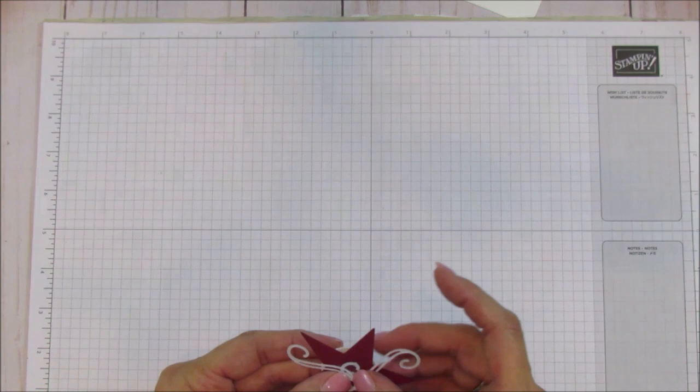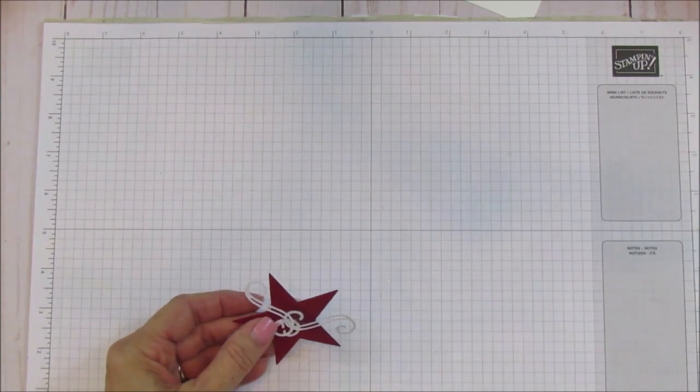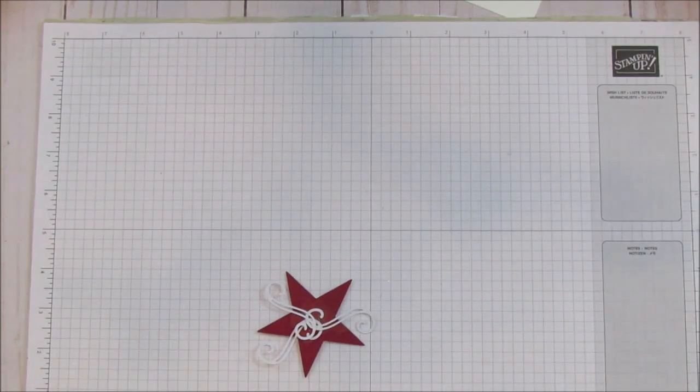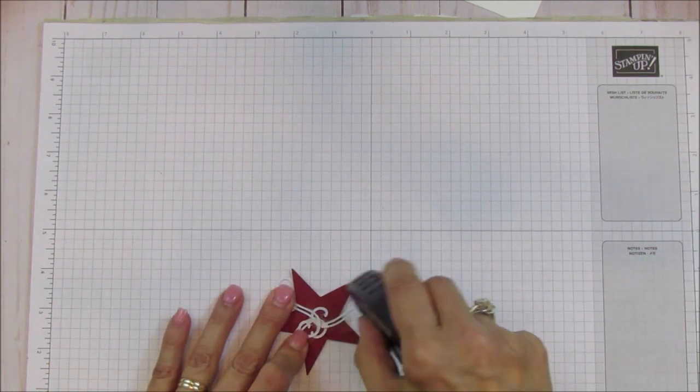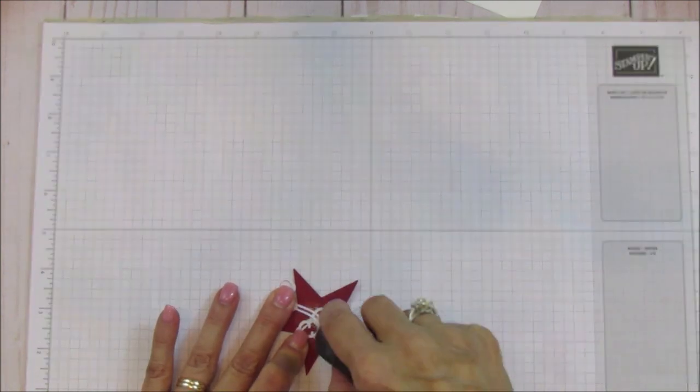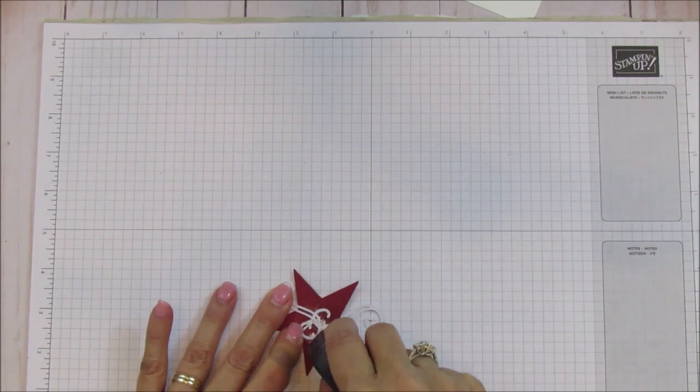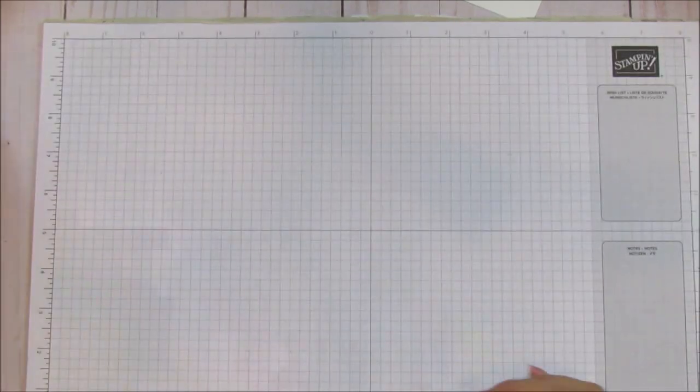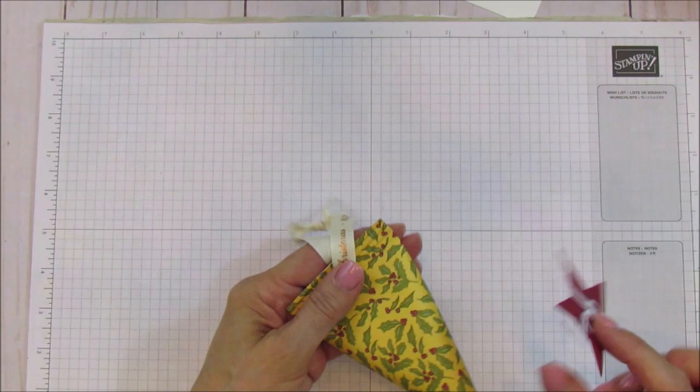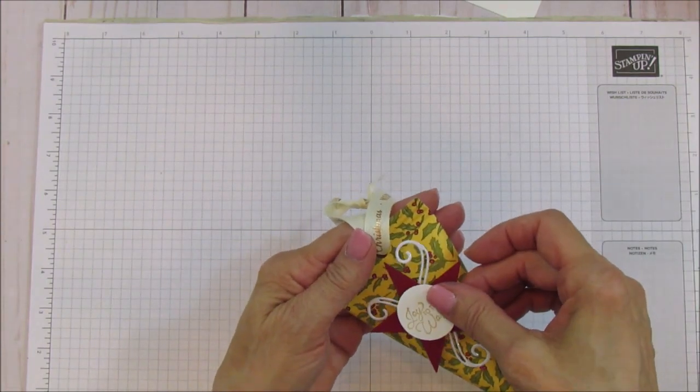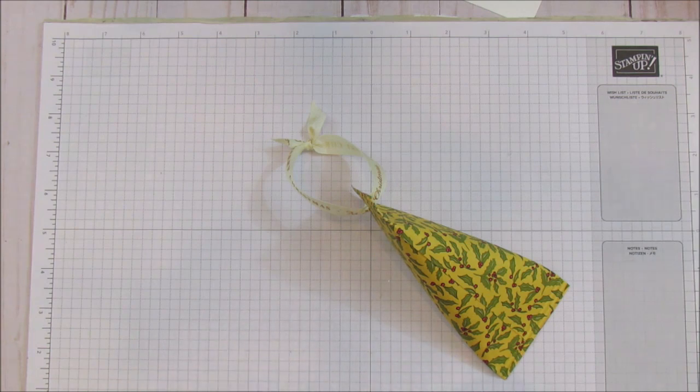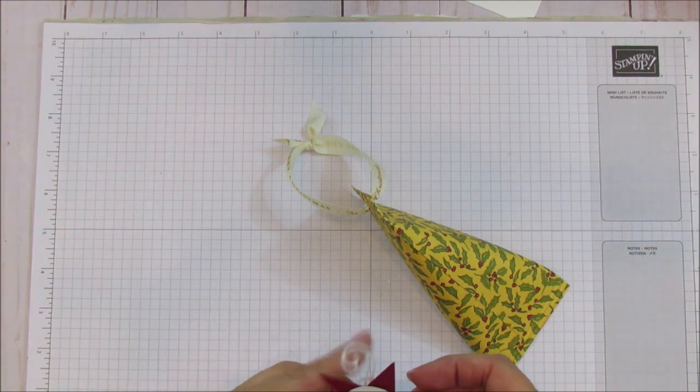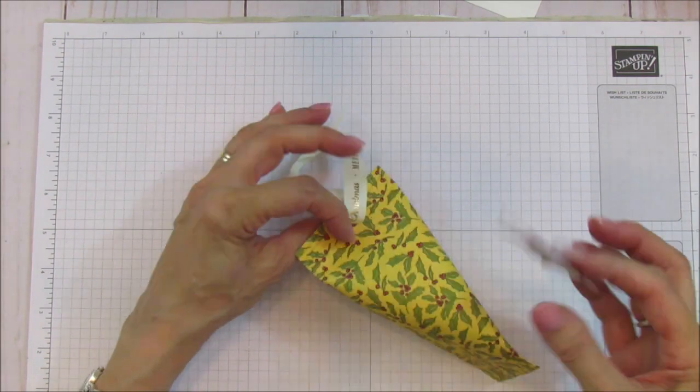And then I'm going to just use some wet glue, but you know what, I think what I'm going to do is use some Fast Fuse because that one's not wanting to stay very well. And we are just going to put it on the front here of our box. I think this one needs to go up a little bit more. Now it's really, really sticky.